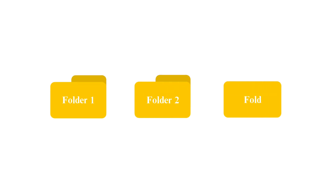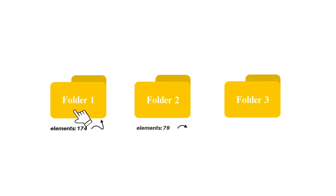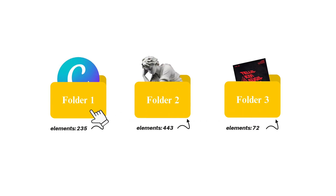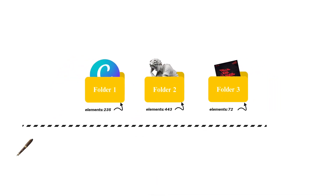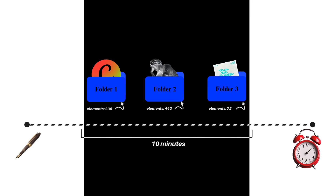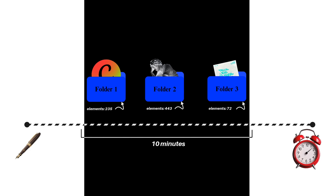Smart image and asset management tools are one of the best ways to save time in a modern graphic design workflow. Every designer knows the frustration of searching for the right file, sifting through endless folders trying to remember where a specific logo, stock image, or past project was saved. When deadlines are tight, spending even 10 minutes looking for an asset can disrupt momentum and slow down the entire creative process.